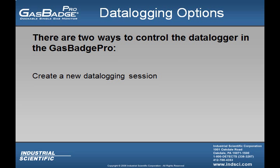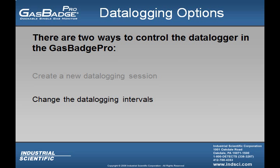There are two ways that allow the user to control the data logger within the instrument. The first option is to create a new data logging session. Data logging files can be broken down into sessions — a user may want to start a new session to keep data applied to a particular individual or a particular job. The second option the user is able to change is the data logging intervals, which can be set anywhere from 2 to 300 seconds.